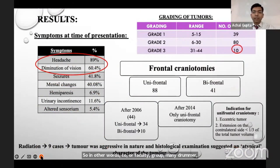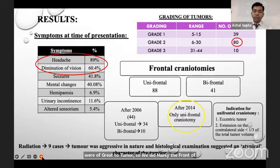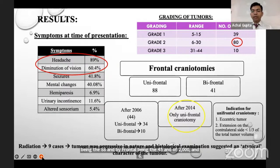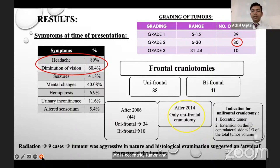In our results for olfactory groove meningioma, headache and diminution of vision were the most common symptoms, and 80 cases were grade 2 tumors. We performed mainly frontal craniotomy: unifrontal in 88 cases and bifrontal in 41 cases. After 2006 we were mainly doing unifrontal craniotomy, and after 2014 we were doing exclusively unifrontal craniotomy. The indication for unifrontal craniotomy is eccentric tumor with extension on the contralateral side of less than one-third of the total tumor volume.